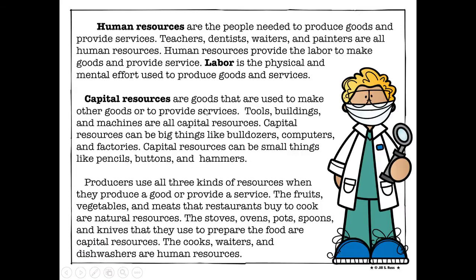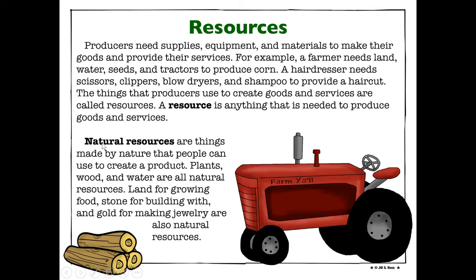There are three kinds of resources. The first kind is called a natural resource — and it's exactly what it sounds like. Natural resources are things made by nature that people can use to create a product. Think of mother nature, the earth. Plants, wood, and water are all natural resources because they come from nature. Land for growing food, stone for building with, and even gold for making jewelry are also natural resources. So natural means nature.